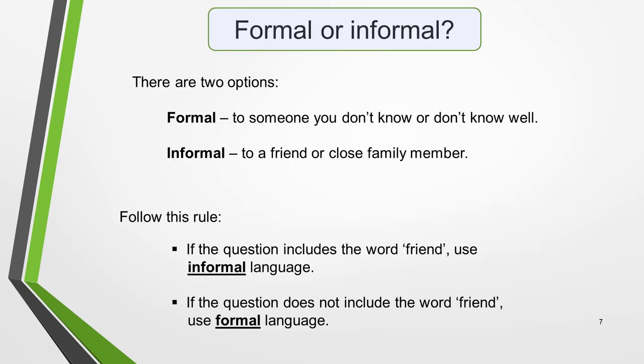IELTS letters must be written in the appropriate tone and style. There are two options: formal, to someone you don't know or don't know well; and informal, to a friend. It's essential that you're able to identify what type of letter you're required to write. Follow this rule: if the question includes the word 'friend', use informal language; if the question does not include the word 'friend', use formal language. The person we're writing to in this question is a friend, so we'll write an informal letter.